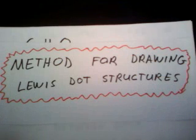All right, so in this video I'm going to go through an example where we are going to propose a Lewis structure, a Lewis dot structure, for a compound that has the molecular formula C2H6O. And the way that we're going to do this is we're going to use the method for drawing Lewis dot structures.